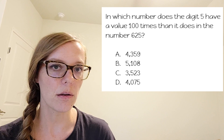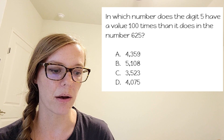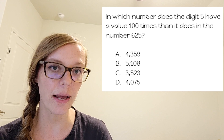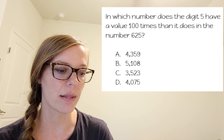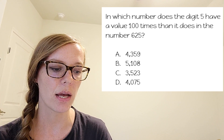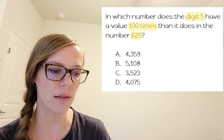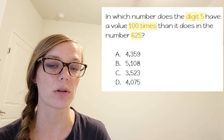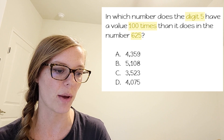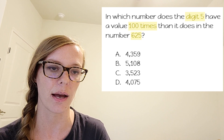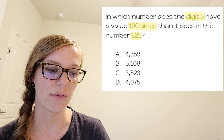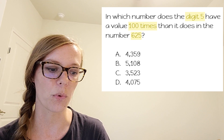Now I'm going to think a little bit more about what that problem is all about. I have a digit that I'm looking for, and I need it to be 100 times that amount. So I'm going to highlight some of those things — the digit 5, the 100 times, and the number 625. Now I'm going to read the answer choices more thoroughly. A is 4,359, B is 5,108, C is 3,523, and D is 4,075.